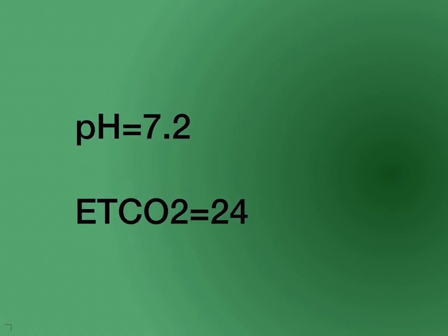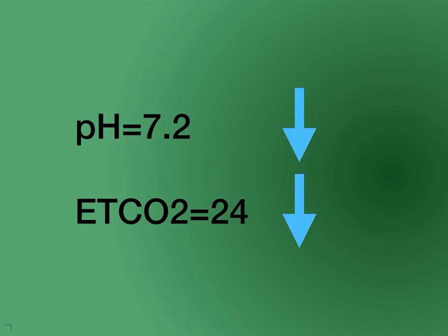Let's look at a couple of examples. pH is 7.2, which is acidic — that's lower than normal, so we consider that down. The end-tidal CO2 is 24, and remember 35 to 45 is normal, so this is also down. Both arrows are moving equally in a downward direction — the same direction — so that's metabolic equal. And with a pH of 7.2, that's acidosis, so this is metabolic acidosis.